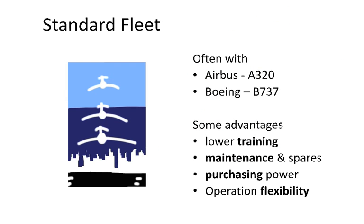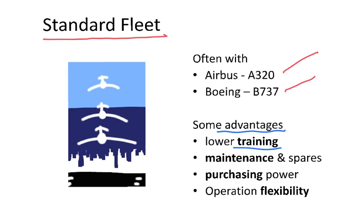Low-cost airlines tend to use a standard fleet. It means they tend to have one single aircraft type, which is generally an Airbus 320 or a Boeing 737. What are the advantages of having one standard fleet? Well, they will have lower training costs. If you have different aircraft types, you have to train pilots and technicians on each type. If you have only one, then you need only one type of training.